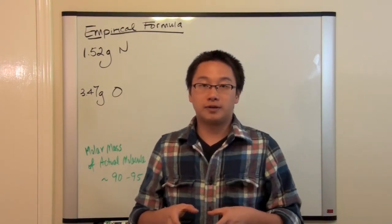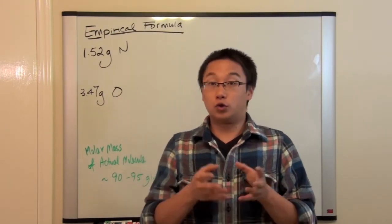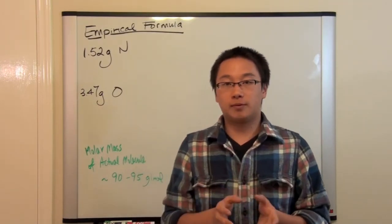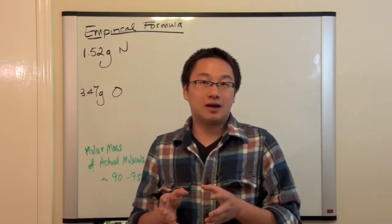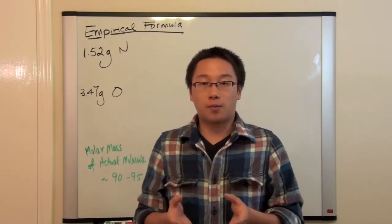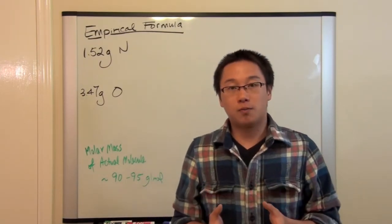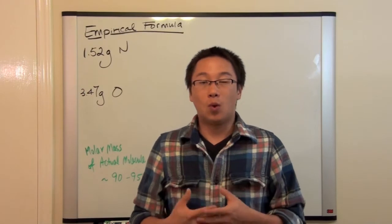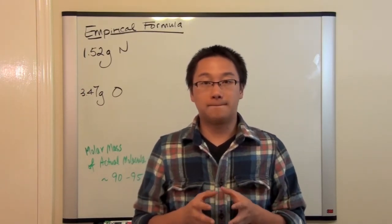The empirical formula is the simplest formula. So if you have something like glucose, C₆H₁₂O₆, you can reduce the chemical formula to CH₂O. This doesn't mean that glucose is CH₂O — it just means that the simplest chemical formula is CH₂O. In order to find out the actual molecule, we need to have the molar mass of the actual molecule to determine the molecular formula.